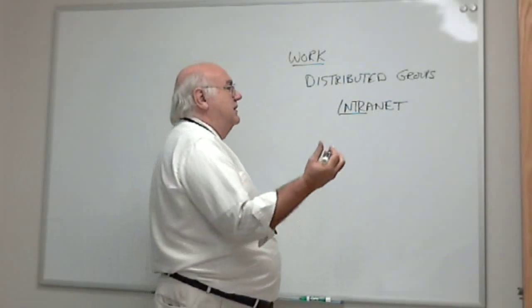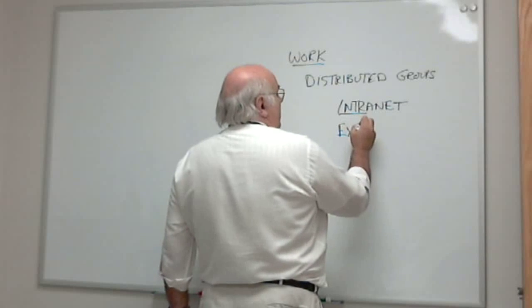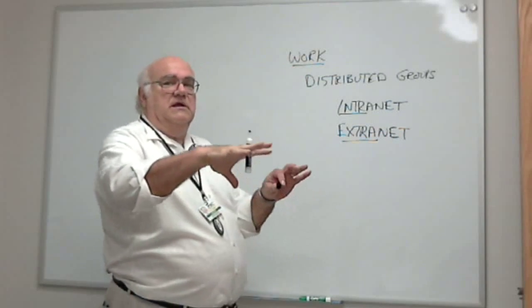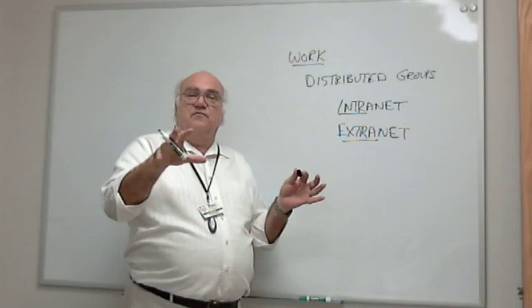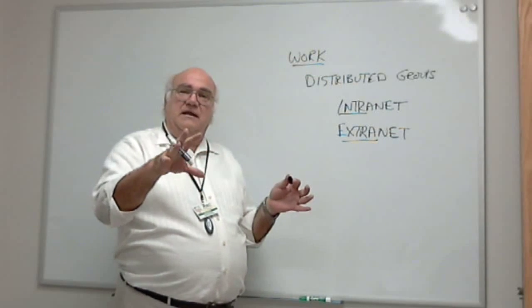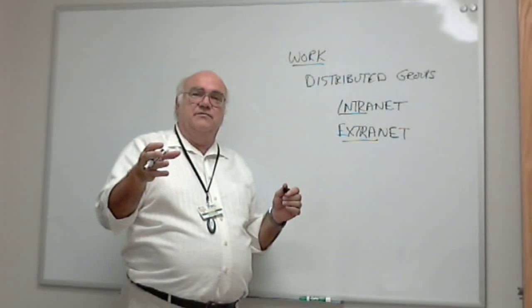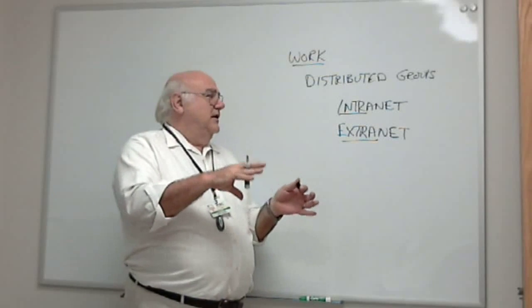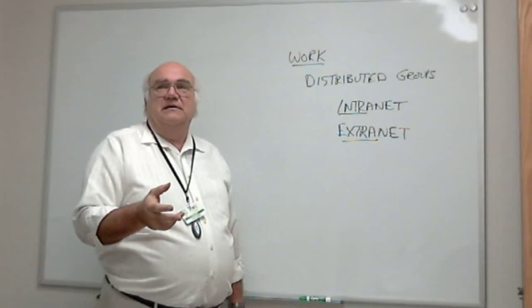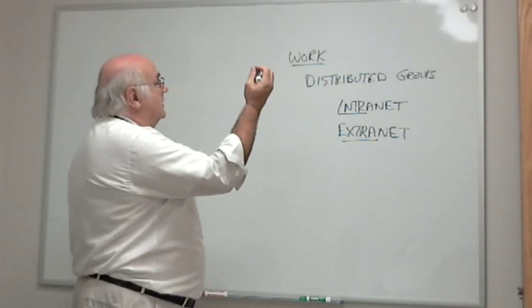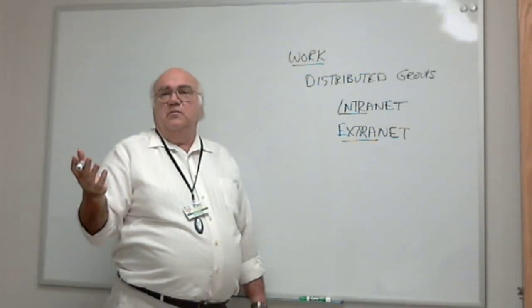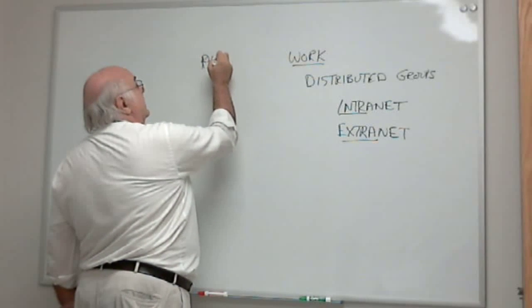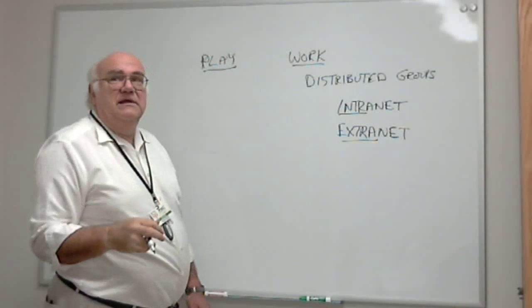They also created an extranet. The extranet is the network that separates their intranet from the internet. The extranet is where customers, suppliers, different people that need some access to the internal documents can get their information without actually compromising the network. Okay, how about work? Everybody, if we just work constantly, we become very dope people. So we also have that play. How do we use the networking for play?